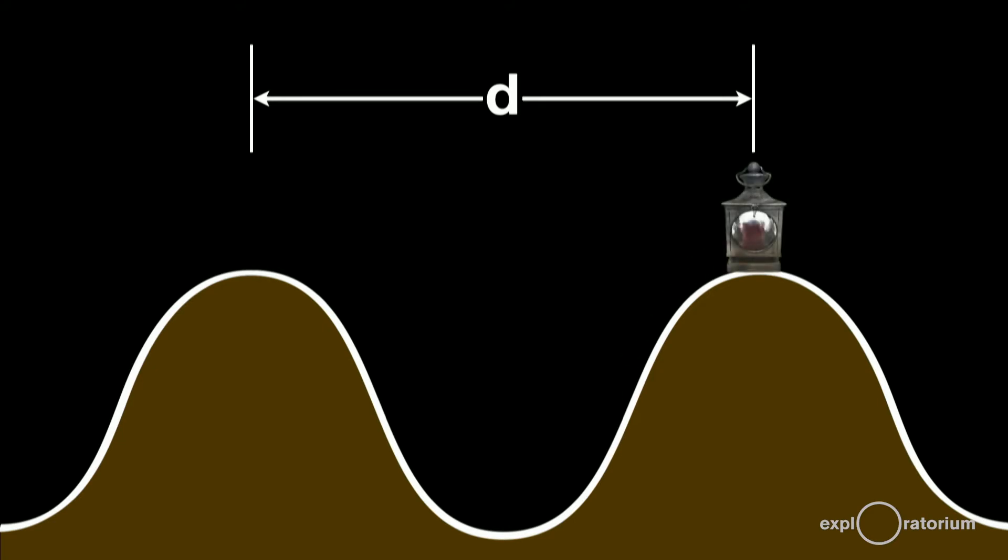Galileo sent his assistant to the far hilltop with a shuttered lantern. Galileo stood on the nearer hilltop with an identical lantern. The plan was for Galileo to open the shutter on his lamp, and then for his assistant to open the shutter of his lamp as soon as he saw the light from Galileo's.